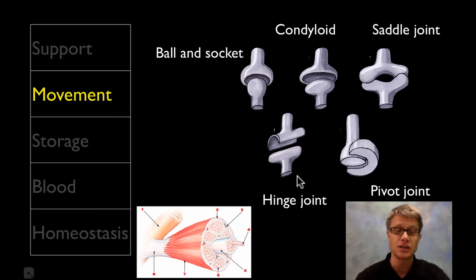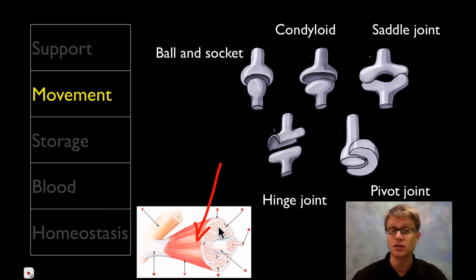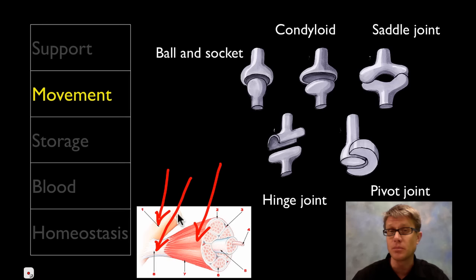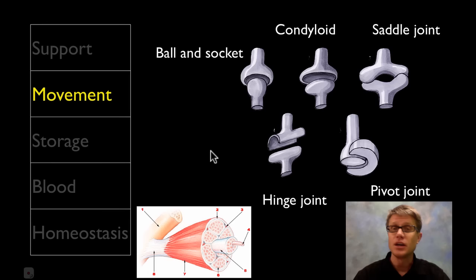Let's get to the next function, which is movement. Bones allow us to move, but they can't move without muscles. One of the big things required for a skeletal system are skeletal muscles. They're not directly attached to the bone — they're going to be attached from muscle to bone with a tendon. Bone can also be attached to bone using what's called a ligament. In order to get movement, since bone is static, you have to have a joint between bones so you can actually get movement.